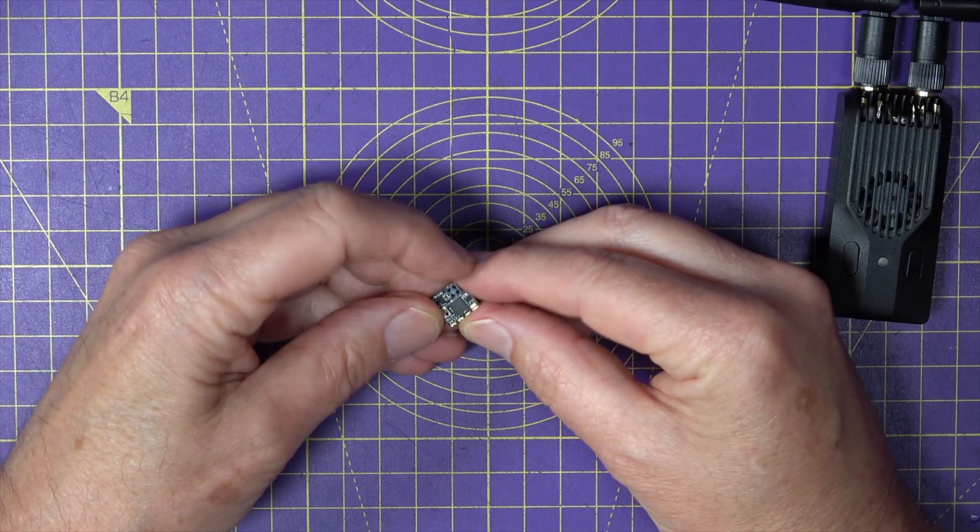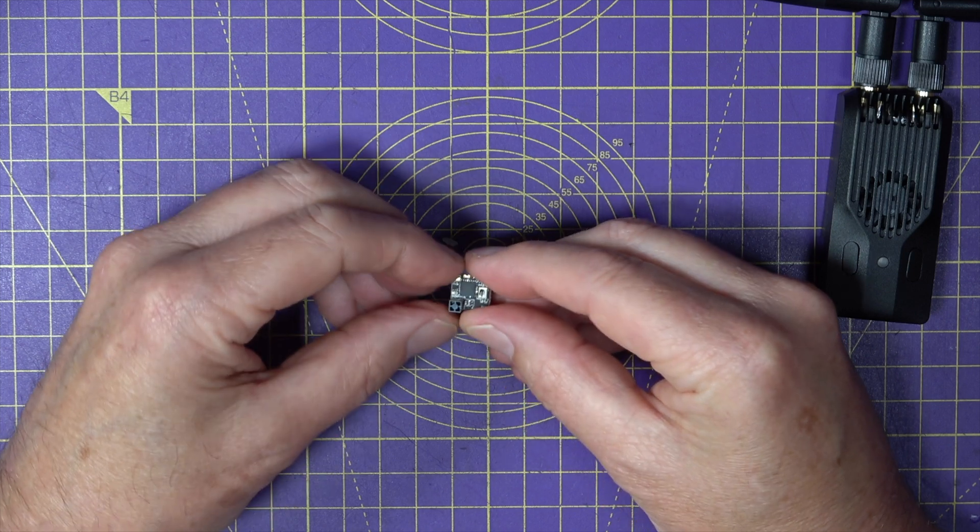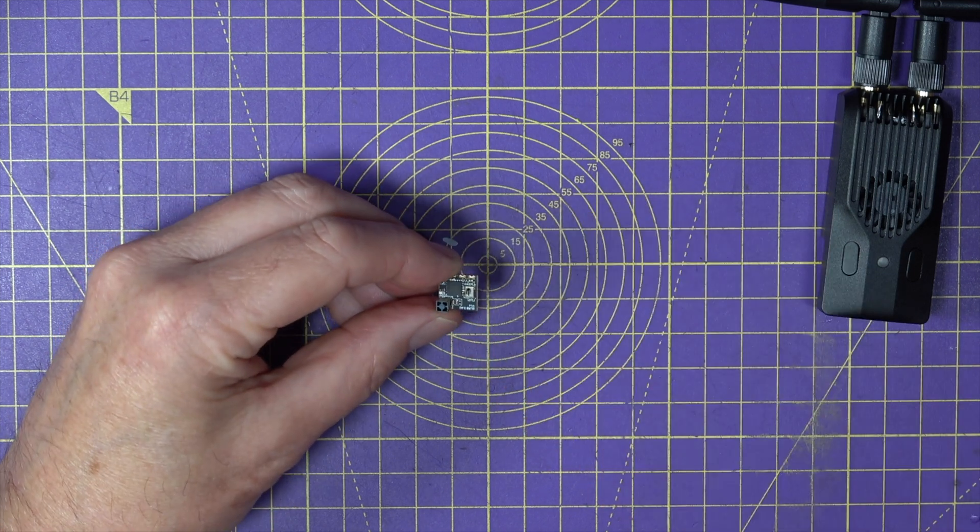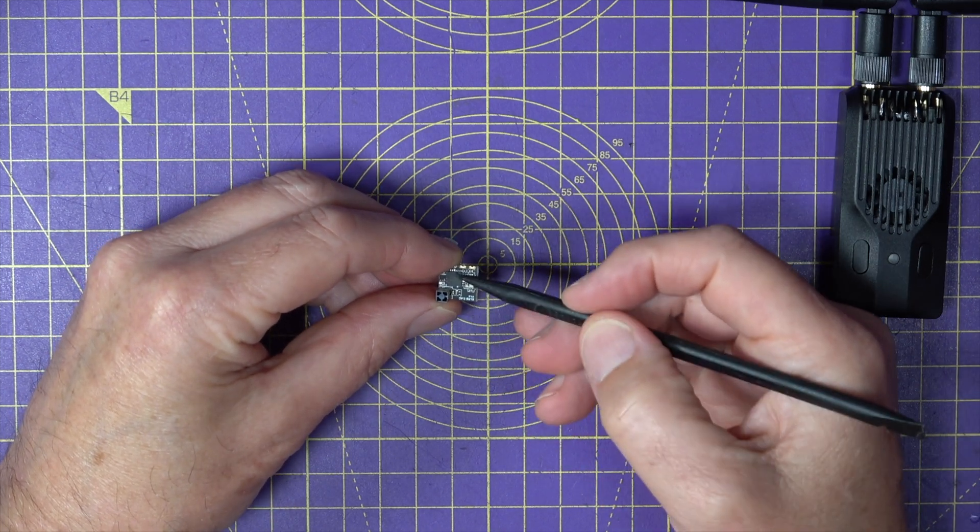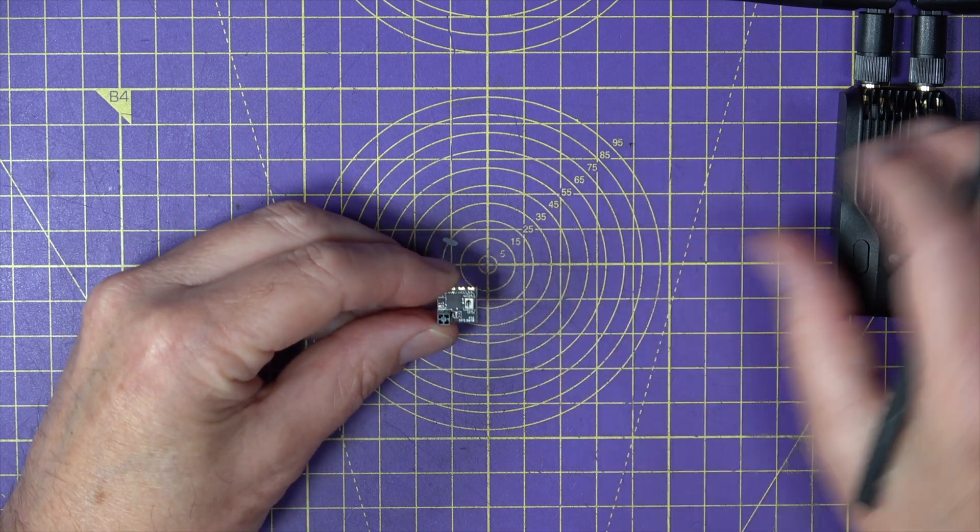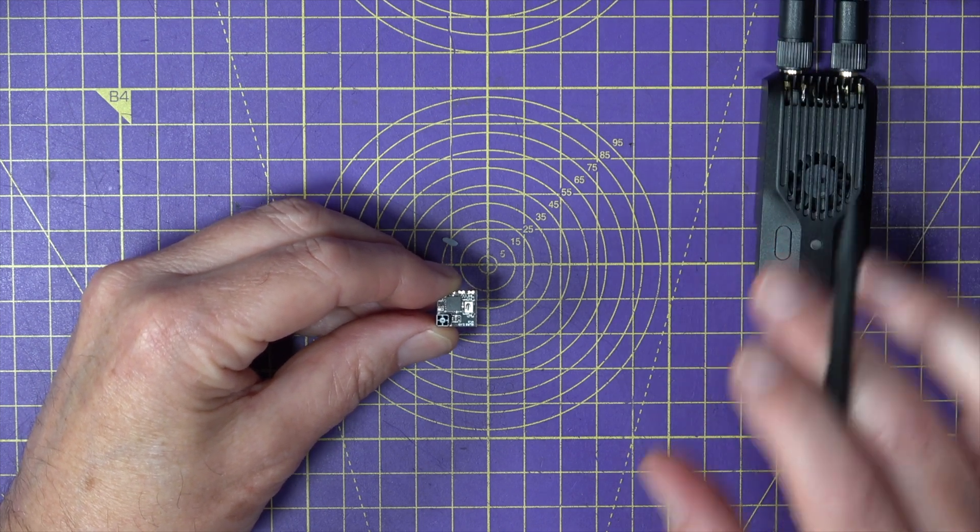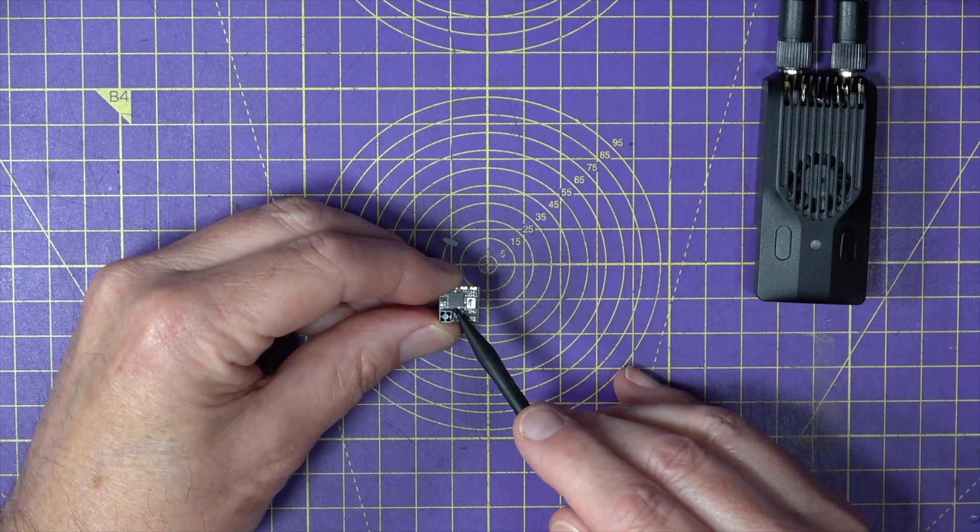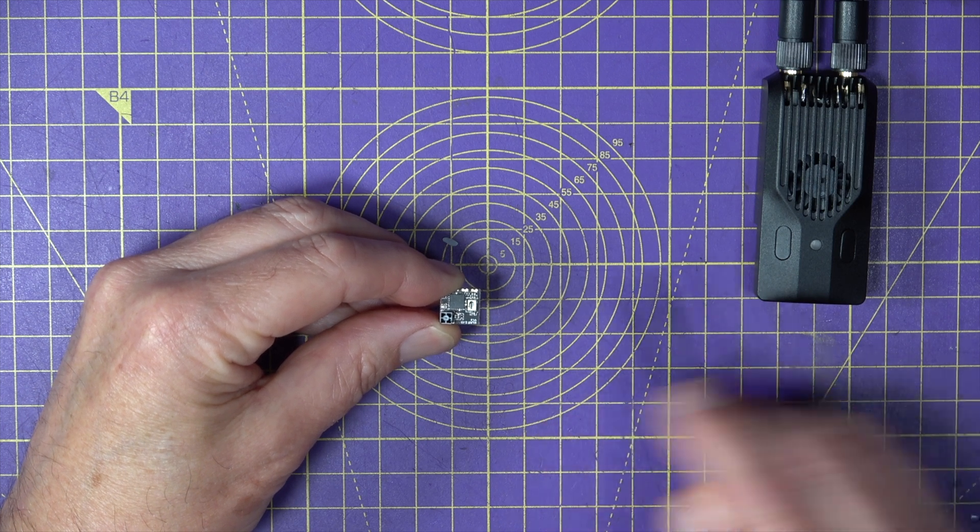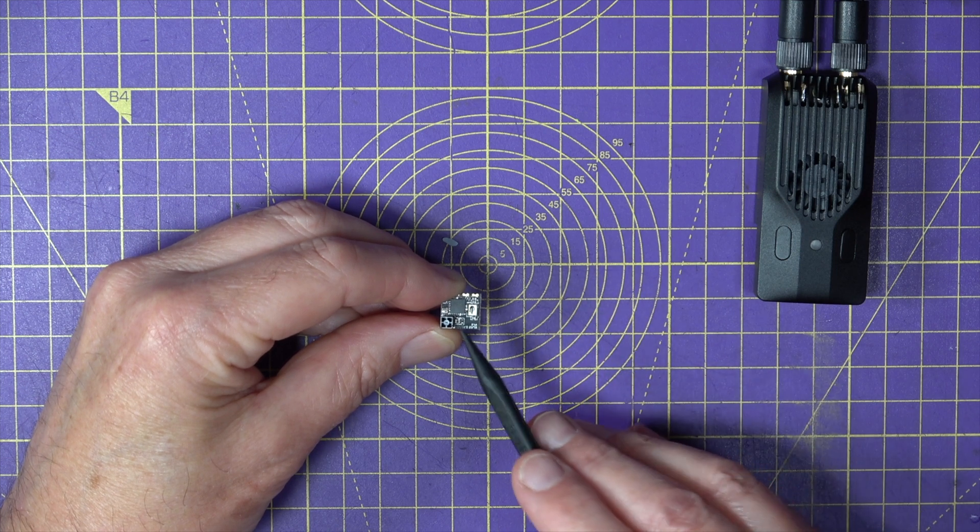So if you've got a single ELRS receiver like this BetaFPV ELRS Lite, you've got a single receiver circuit and a single antenna. In this case, it's a little ceramic antenna. So when a packet is sent from your transmitter, it only has one chance to receive it. So if there's any interference along the way, or the distance is just too much, it won't be received.